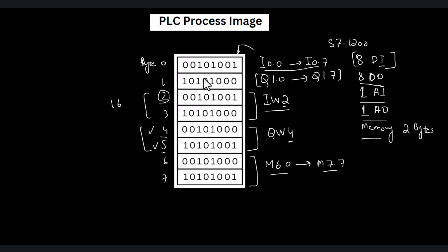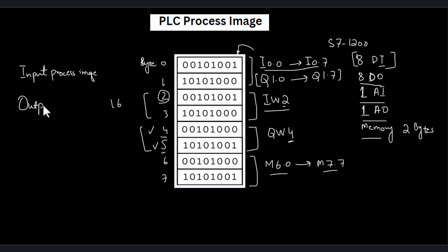Here is the representation of the PLC process image that has allocations for input data, output data, and memory data. This brings us to the conclusion that the process image data can be divided into: input process image, output process image, and internal data.